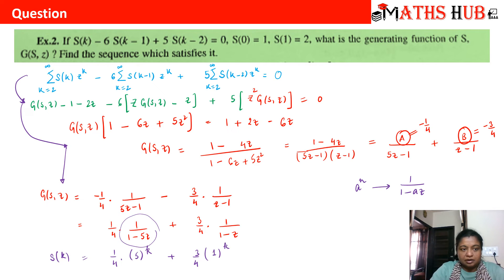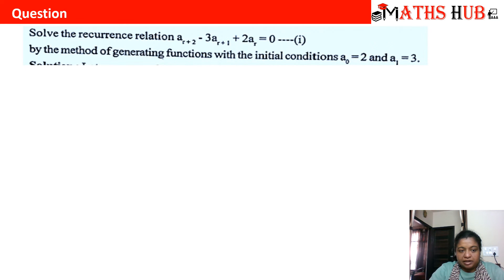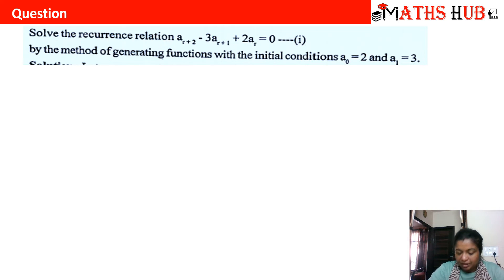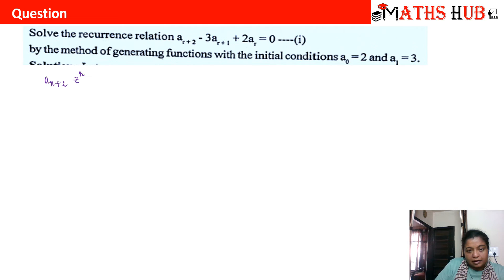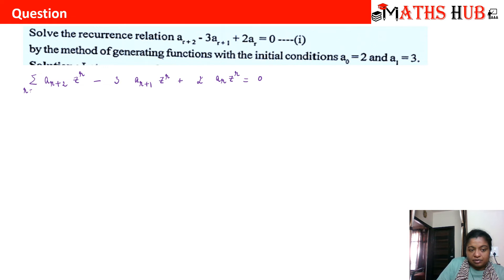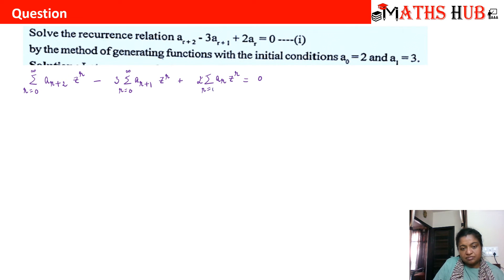Let us try one more problem. In the next problem, we are given the recurrence relation ar+2 − 3·ar+1 + 2·ar = 0, with initial conditions a0 = 2 and a1 = 3. The index is r. We multiply the recurrence relation by z^r: ar+2 · z^r − 3·ar+1 · z^r + 2·ar · z^r = 0, and we take the summation with r going from 0 to infinity.